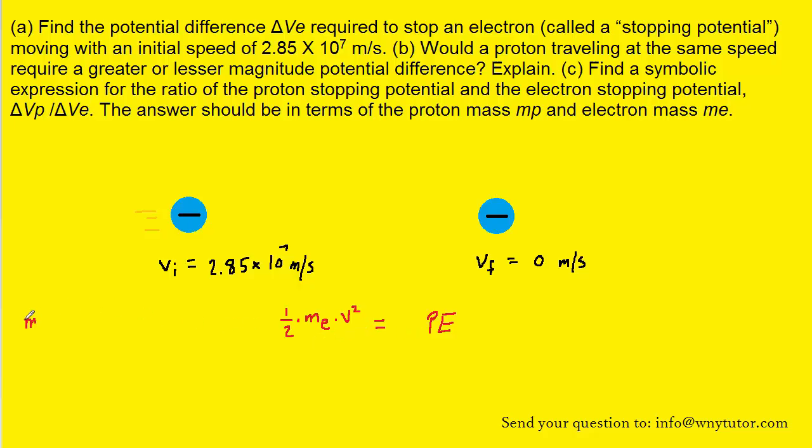We just need to recall that the mass of an electron is equal to 9.11 times 10 to the minus 31 kilograms. And so with that value for the mass of the electron as well as the initial speed of the electron, we are ready to calculate the final potential energy of the electron once it has stopped. And when you plug in the known values and calculate it on your calculator, you should get 3.7 times 10 to the negative 16th will equal the final potential energy.